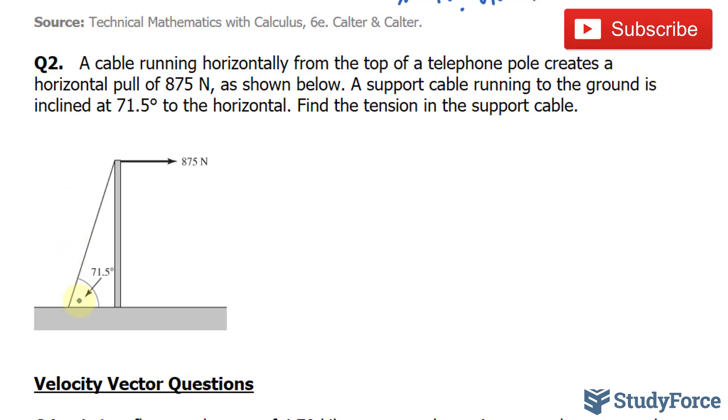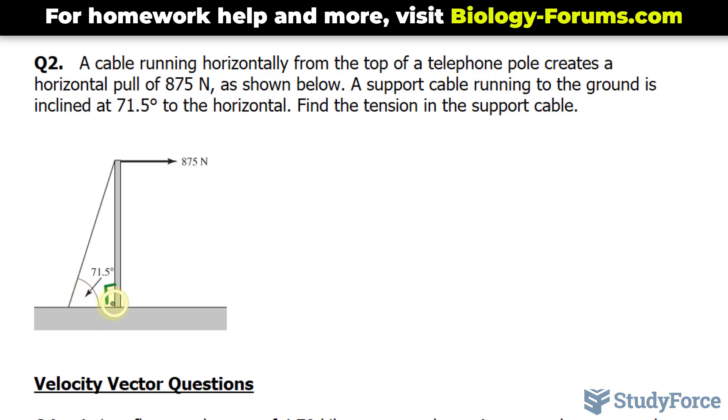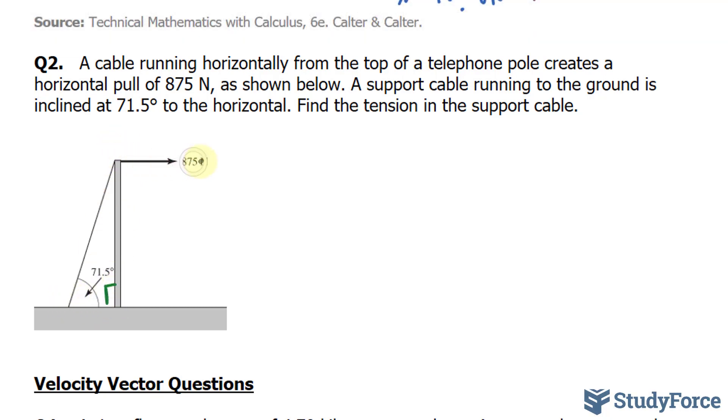So we're looking for the magnitude of this vector. Keep in mind that this telephone pole is at equilibrium. It's not moving and it's perfectly straight up. This is a right triangle. And if it is at equilibrium, then the horizontal forces acting on this pole need to be equal. So if this is 875 Newtons, so should this. Therefore, the horizontal component of this vector is known. It's 875.